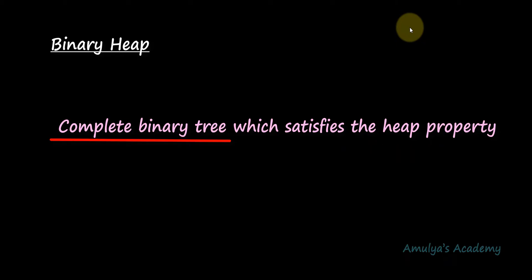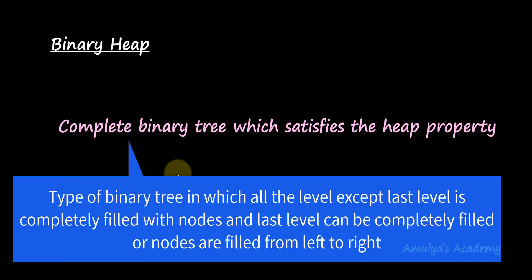We already discussed this while discussing types of binary trees, so I won't explain it in detail here but I'll just refresh your memory. A complete binary tree is a type of binary tree in which all levels except the last level are completely filled with nodes, and in the last level nodes need to be filled from left to right, or all nodes are as far left as possible.